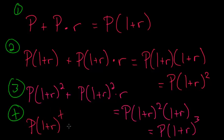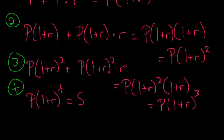And we can say that this is equal to S, and S is the sum of money we have after T periods. And this is the basic formula for compound interest, but we can generalize it even further.